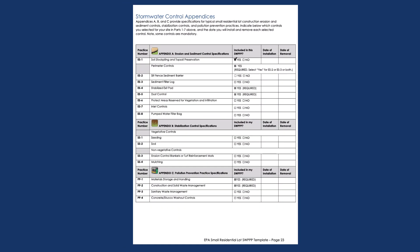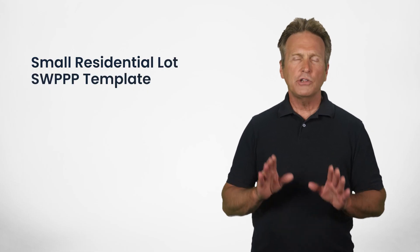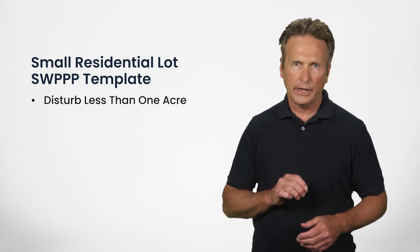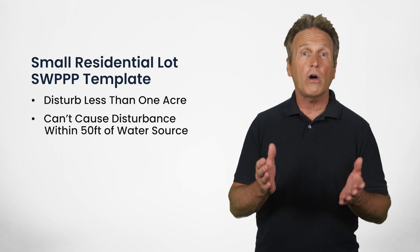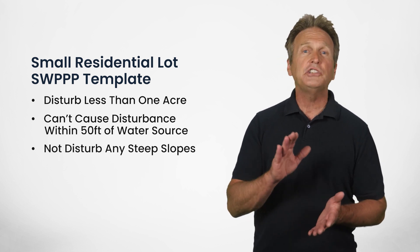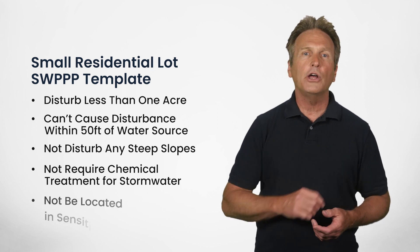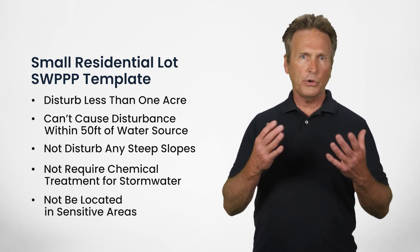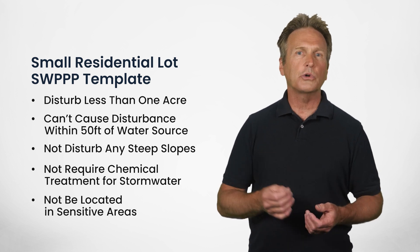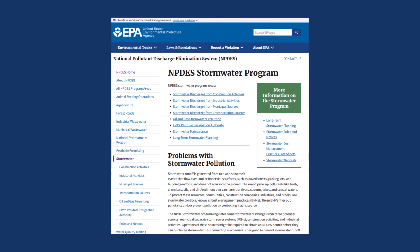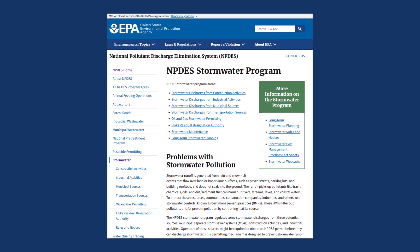Additionally, it features an instructive appendix detailing the implementation of various BMPs suitable for these projects. To qualify for the small residential lot template, your site must disturb less than one acre of land, not cause disturbance within 50 feet of a water source, not disturb any steep slopes, not require the use of chemical treatment for stormwater, and not be located in sensitive areas such as areas with endangered species, historic sites, or wetlands.